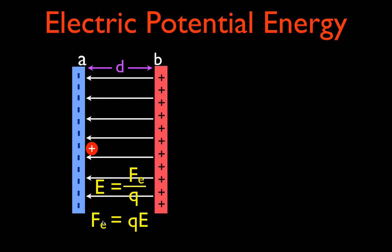Now let's put a charge between those two plates — that's a positive charge, and it's stuck here on this negative plate. You could just as easily put a negative charge over here, and everything we'd be talking about would basically be the same — we'd just reverse the direction. We have a positive charge attached to this negative plate because there's a force applied by the electric field, and the force is equal to the charge times the electric field — QE. Increase the charge, increase the field, and the force goes up.